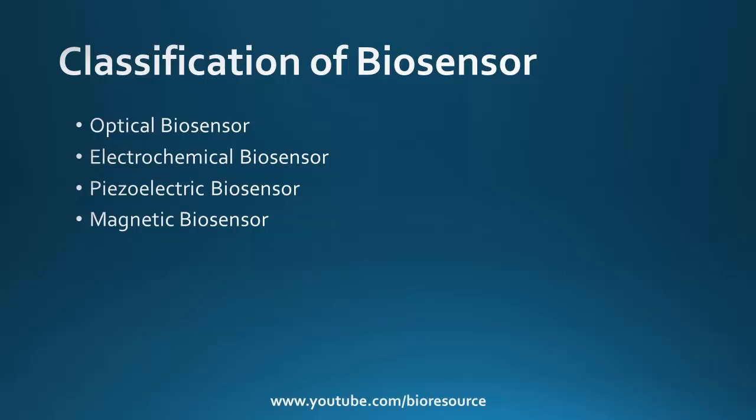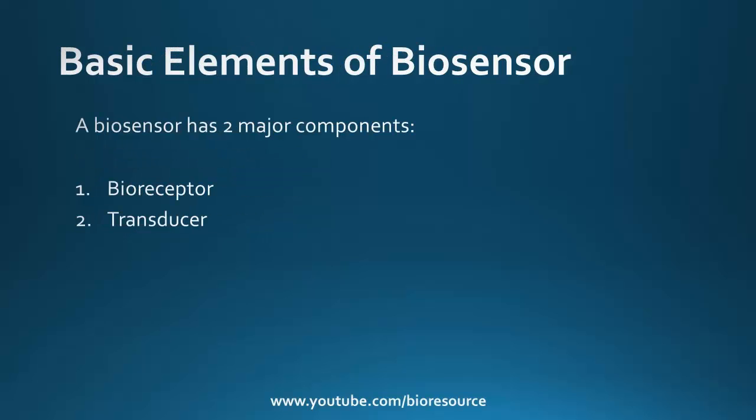A biosensor has two major components: the bioreceptor and the transducer. Biosensors can be classified into different classes based on the method of detection. Examples include optical biosensors, electrochemical biosensors, piezoelectric biosensors, and magnetic biosensors.